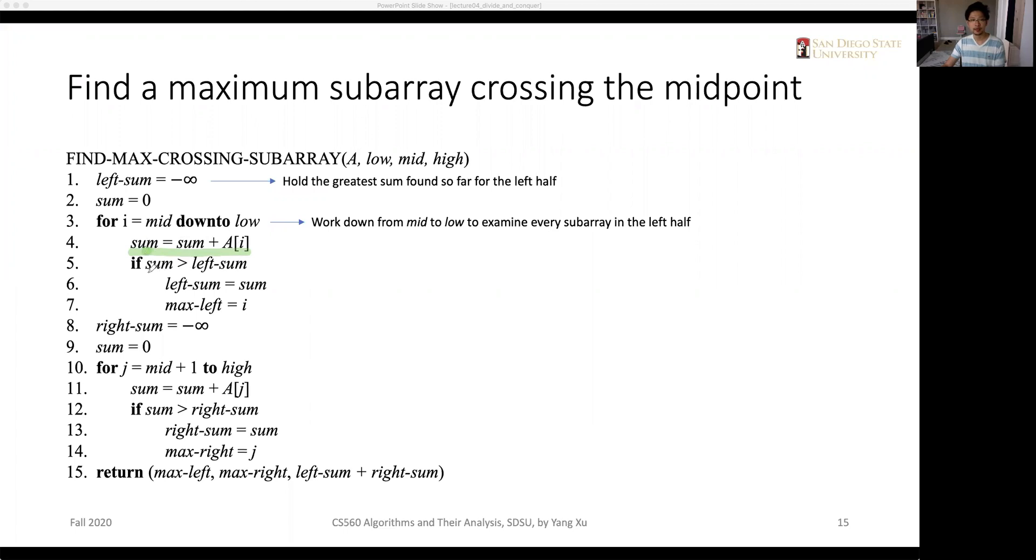If the summation is greater than the current value of left sum, it will update left sum by assigning sum to left sum. And then also updates the index max left, which is the current index of the iteration. So the left sum should record the greatest summation within the left half. And max left indicates the corresponding index.